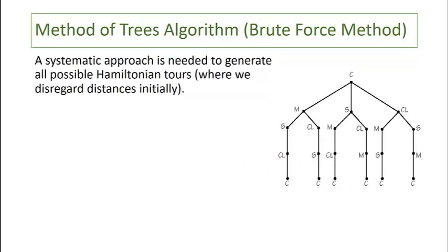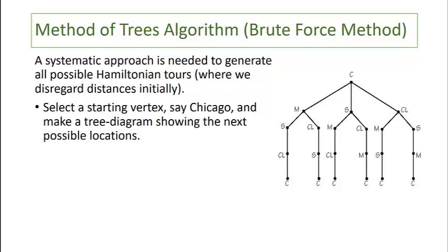Now this method is called the method of trees algorithm or the brute force method. It's a systematic approach needed to generate all possible Hamiltonian tours where we disregard the distances initially. We select a starting vertex, our example is Chicago, and make a tree diagram showing the next possible locations. At each stage there was one less choice for us to make.